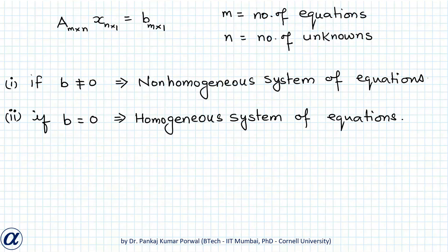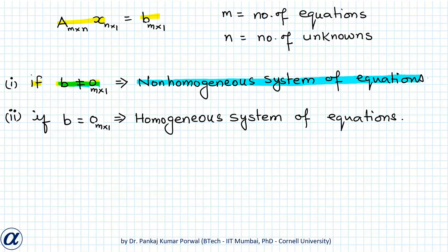For the system Ax equals b, if b is not equal to the zero vector (also of size m by 1), the system is called a non-homogeneous system of equations. If b equals the zero vector, the system is called a homogeneous system of equations. Both cases can be further divided into three different sub-cases.